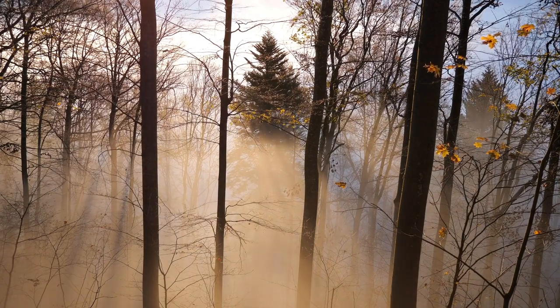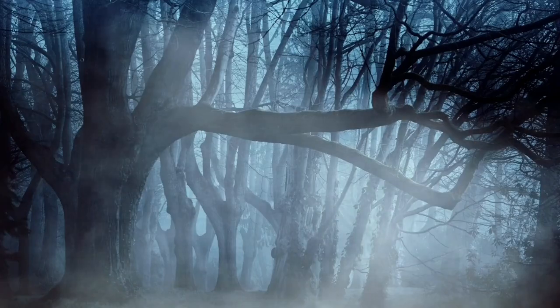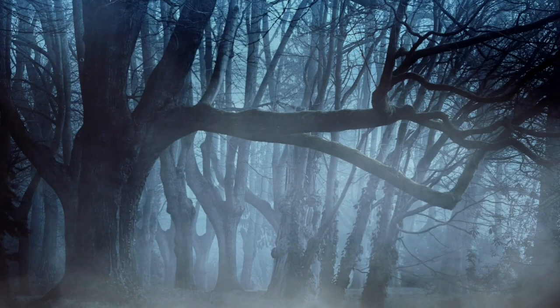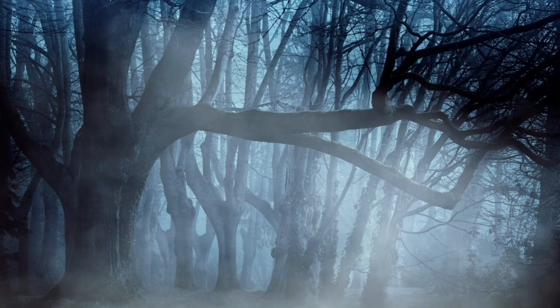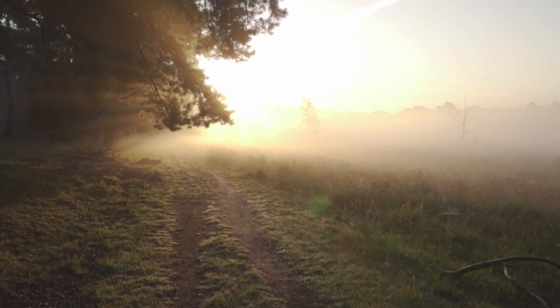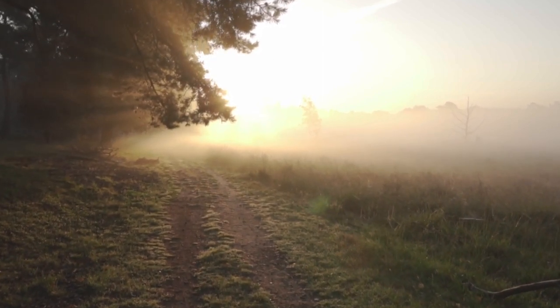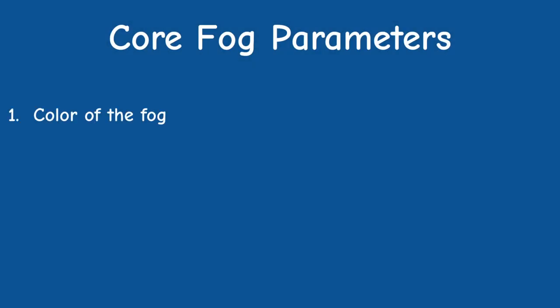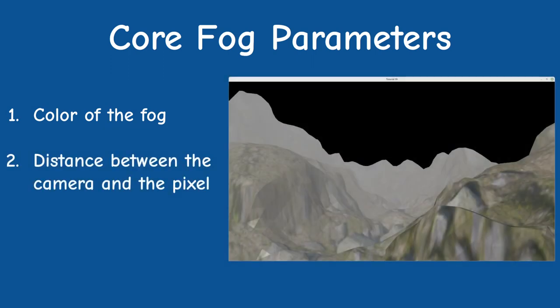Let's talk about fog in general. Fog is an environmental effect — it's basically an interference with our normal line of sight. It absorbs and scatters the light rays which are reflected off of objects, so what we actually see is a combination between the color of the object and the color of the fog. Fog tends to be on the grayish side, but if your game needs a pink fog, go ahead and knock yourself out.